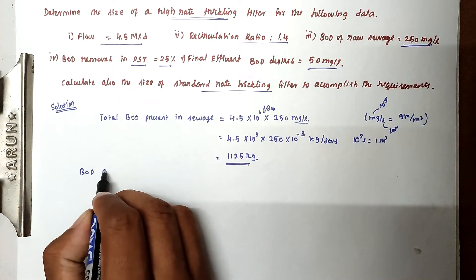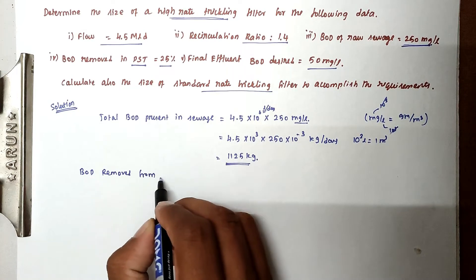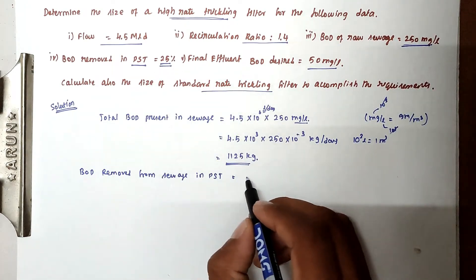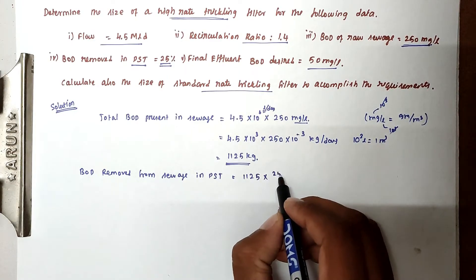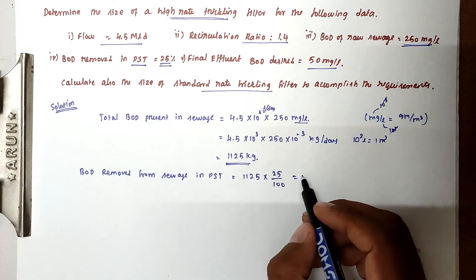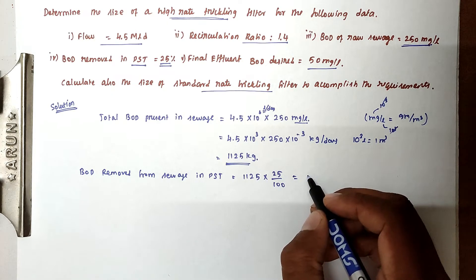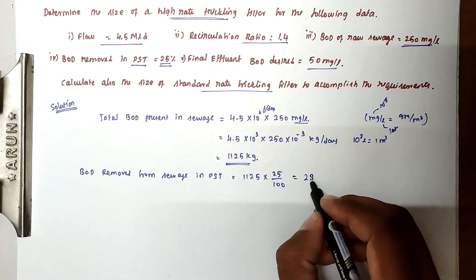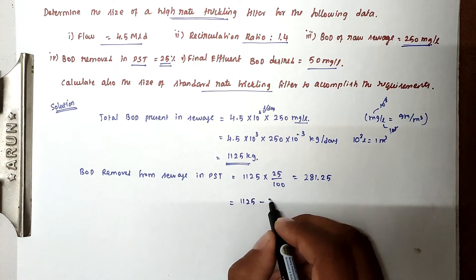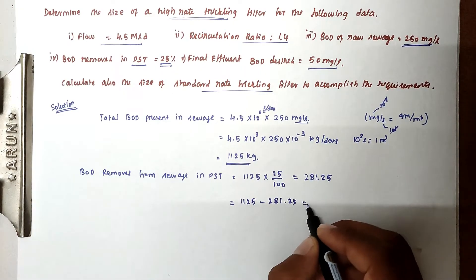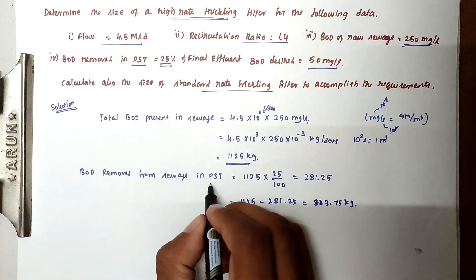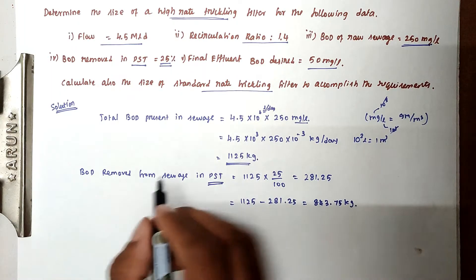BOD removed in the primary sedimentation tank is 25%. So 1125 × 25/100 = 281.25 kg. Therefore, total BOD entering the trickling filter is 1125 minus 281.25, which equals 843.75 kg.